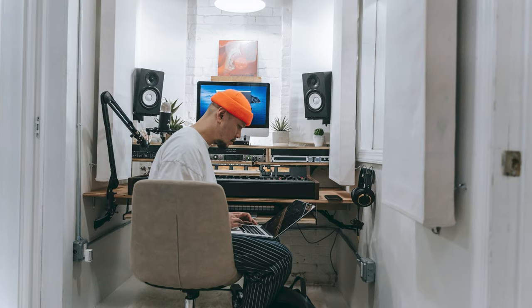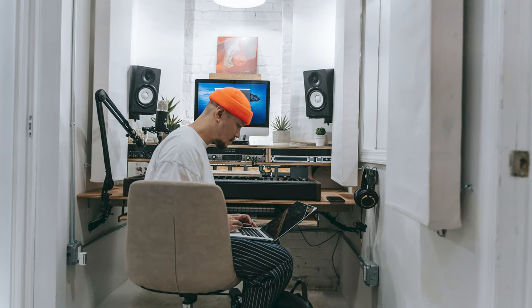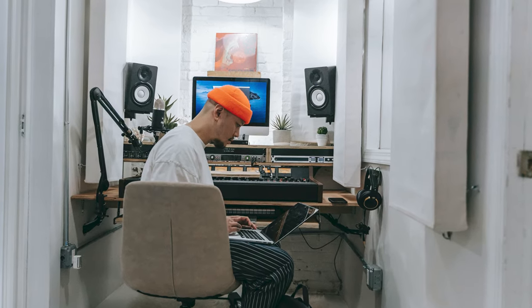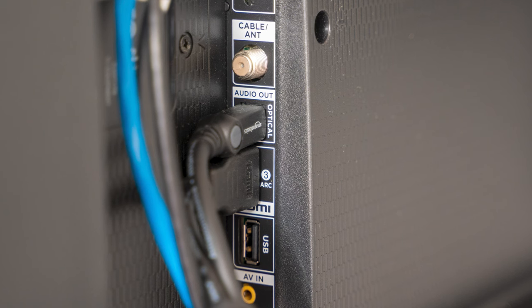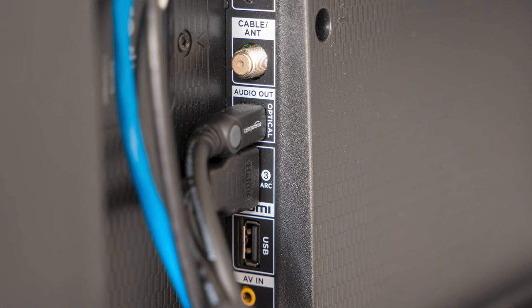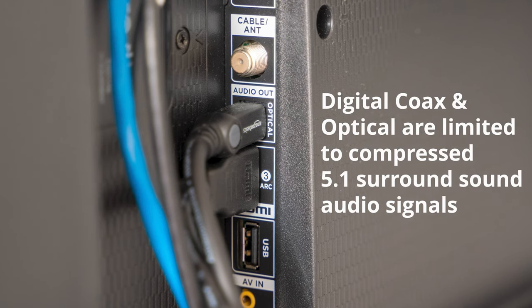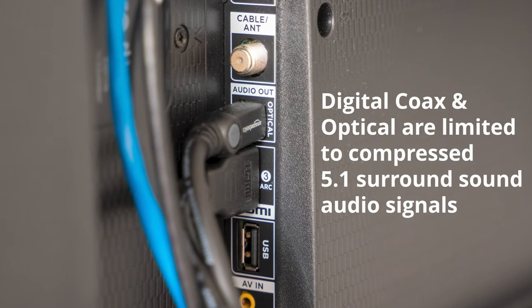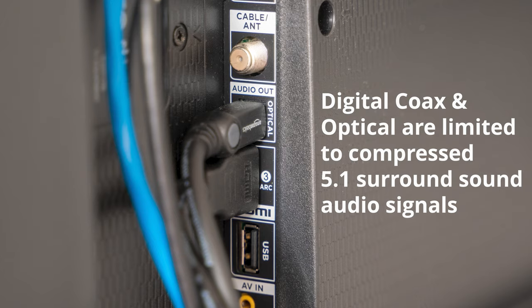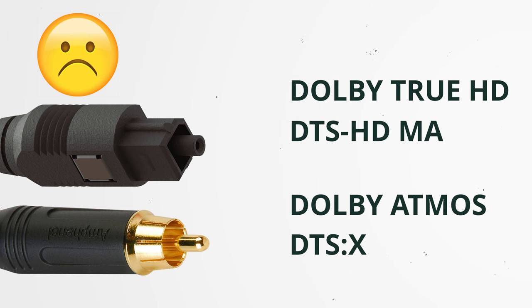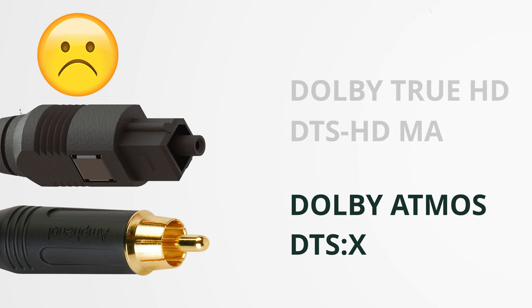Most commonly you'll find the use of either digital coax or optical cables in hi-fi systems, since both types of cables can transfer uncompressed stereo PCM audio signals. In home theater applications though, digital coax and optical are less common nowadays since they are limited to compressed 5.1 Dolby Digital and DTS surround sound signals. Neither one can carry uncompressed high bit rate signals like Dolby TrueHD or DTS-HD Master Audio, so you can forget about Dolby Atmos and DTS-X as well.